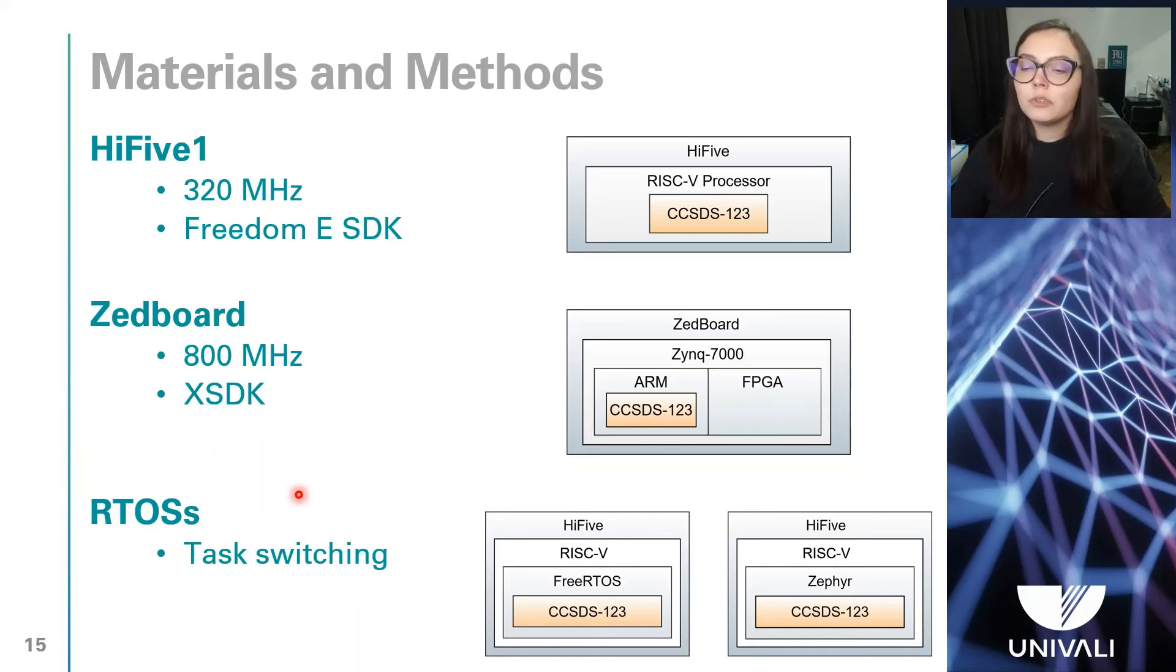A high-priority task, which is the CCSDS-123 compressor, and a low-priority task, which prints the Hello World message on the terminal screen. The low-priority task executes repeatedly until it is interrupted by the high-priority task.